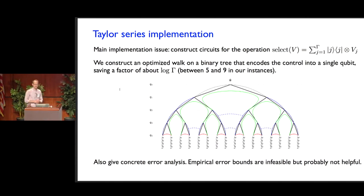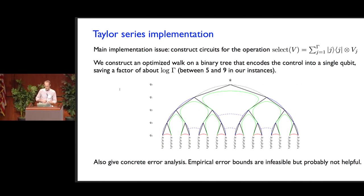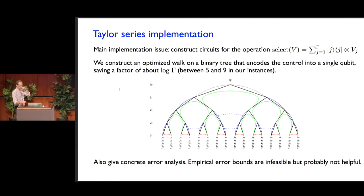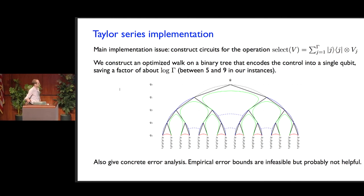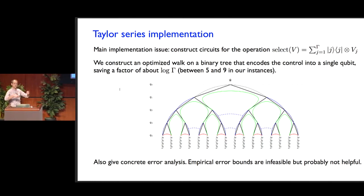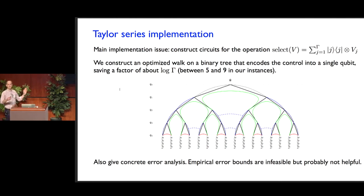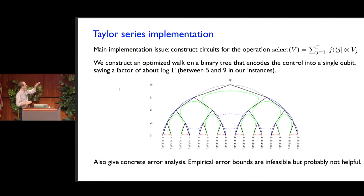What about the other algorithms? In the Taylor series algorithm, the most significant implementation detail has to do with the implementation of what we call select-V gates. These are gates that, conditioned on some register storing the value j, apply some known unitary V_j. We developed an improved implementation of these gates, which corresponds to a kind of traversal of a binary tree. We also need to give some concrete error analysis for this algorithm. We have a suspicion that empirical error bounds probably will not improve things very much for this algorithm.